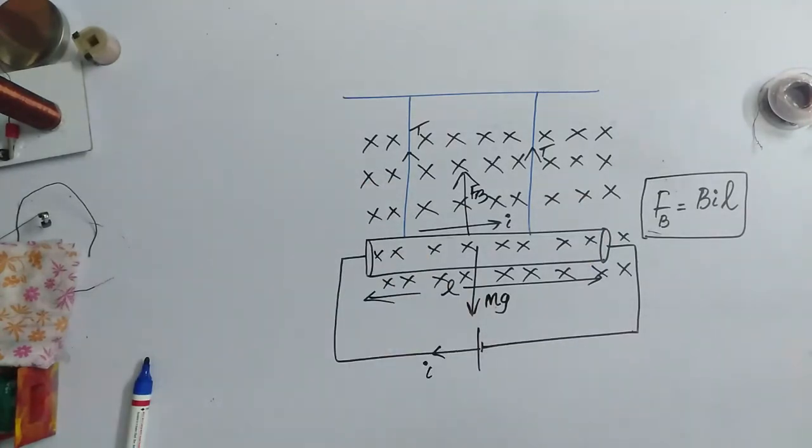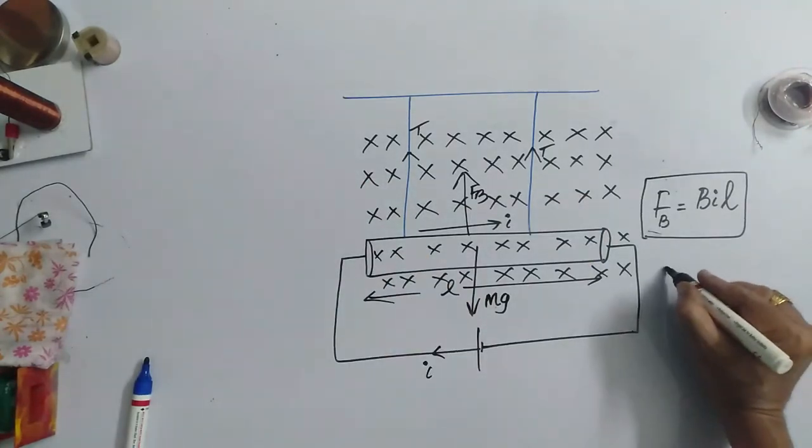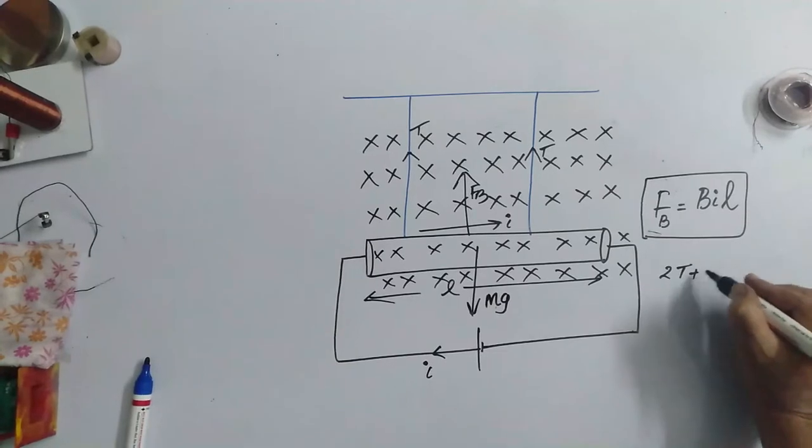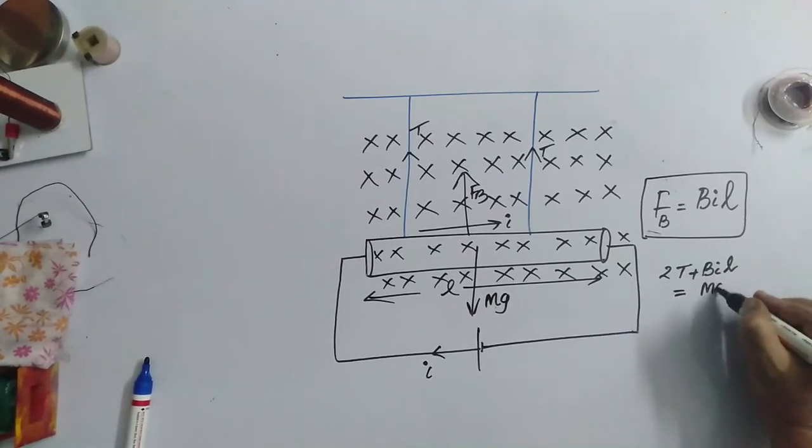Now, when it is in the equilibrium condition, what we can write? 2T, upward forces must be equal to downward forces. Plus, B I L is equal to M G.